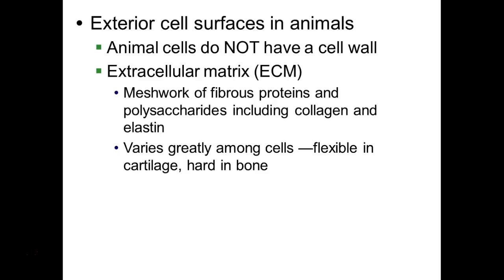Animal cells don't have a cell wall, but they do have an extracellular matrix. There's something out there to keep the cell hydrated and prevent it from drying out — it's usually a meshwork of fibrous proteins and polysaccharides. Collagen and elastin are two of these proteins. Collagen is found underneath our skin and keeps our skin looking nice and smooth. As we get older, the collagen compresses down like a polyester pillow, and as it does, the skin over the top gets wrinkly. Elastin helps our skin stretch, and it can be overstretched, leading to stretch marks. The extracellular matrix varies greatly among cells — flexible in cartilage, but hard in bone.